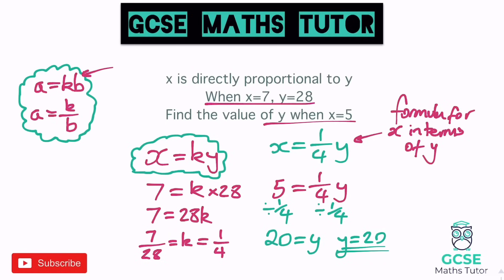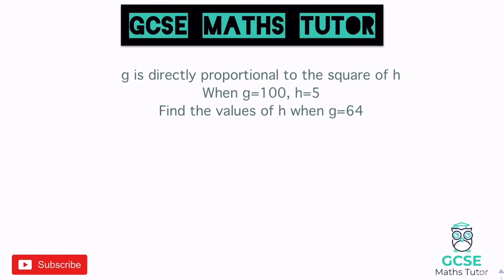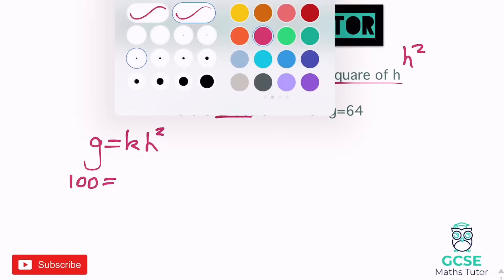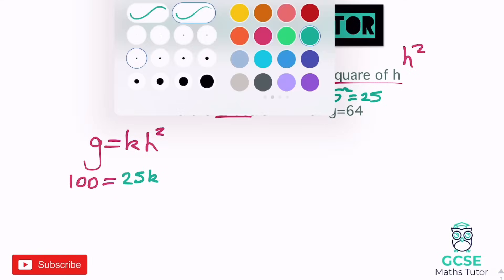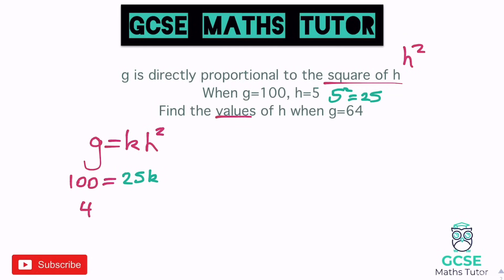Next question: g is directly proportional to the square of h. When g equals 100, h equals 5. Find the values of h when g equals 64. We write g equals k h squared. Substituting: 100 equals k times 5 squared. Five squared is 25, so 100 equals 25k. Dividing both sides by 25 gives k equals 4.